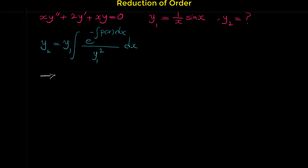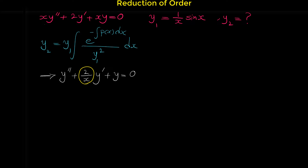If we divide both sides by x, the x cancels and we have: y'' + (2/x)·y' + y = 0. Now the expression (2/x) here is p(x).